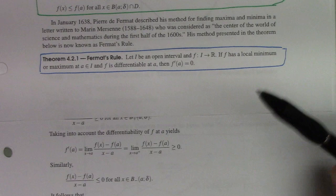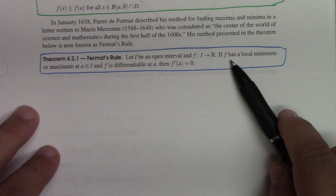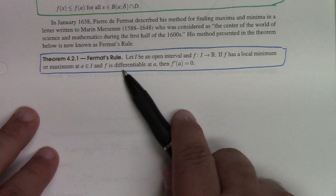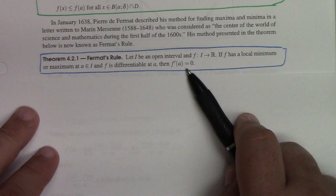For Fermat's rule, it says the following: if I is an open interval and f is a function from I to the reals, if f has a local minimum or maximum at a and f is differentiable at a, then f'(a) is equal to zero.